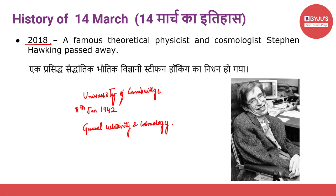During this period, he was diagnosed with an early-onset, slow-progressing form of motor neuron disease, which caused his paralysis. After the loss of his speech, he started using a speech-generating device to communicate. Hawking was the first to set out a theory of cosmology explained by a union of the general theory of relativity and quantum mechanics. He is also known for his theoretical prediction that black holes emit radiation, often called Hawking radiation.